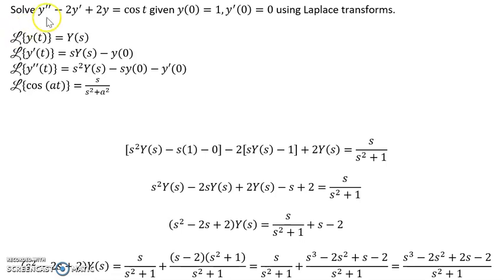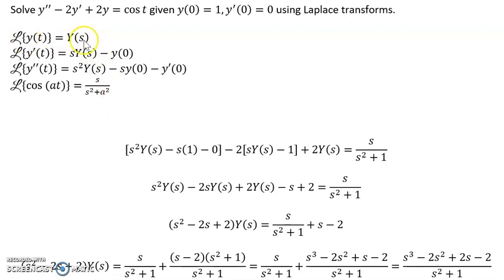We have our differential equation y'' minus 2y' plus 2y equals cosine t, with our initial conditions. In order to convert to the Laplace transform, we use the formulas: y becomes Y(s), y' becomes sY(s) minus y(0), and y'' becomes s²Y(s) minus sy(0) minus y'(0).